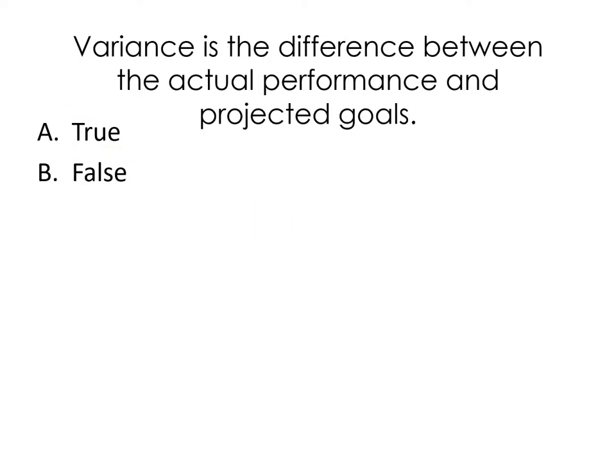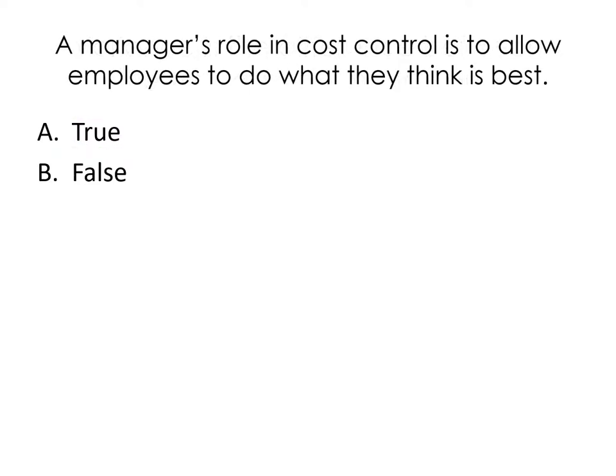Variance is the difference between the actual performance and the projected goals — true or false? That is true. A manager's role in cost control is to allow employees to do what they think is best — true or false? That is false.